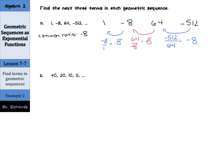Now we're going to take -512 and multiply that by -8, which gives us 4,096. If I take that 4,096 and multiply by -8, we get -32,768. And if you take -32,768 and multiply that by -8, you would get positive 262,144.